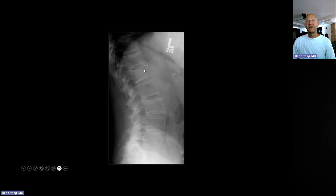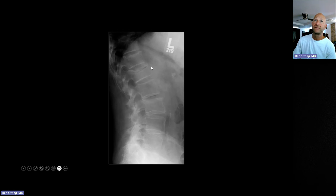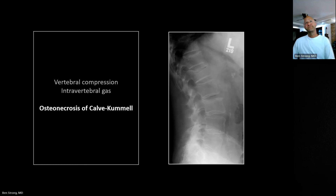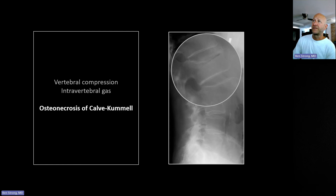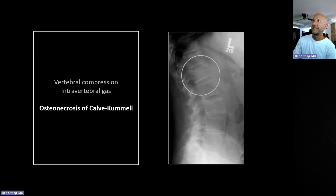I point that out because when I show this film to residents as a quiz question, they always miss it — they see the linear gas collection and write it off as disc space gas, but it clearly is not. You can see it's lying below the level of the superior end plate. This is indicative of osteonecrosis — this is osteonecrosis of Kümmel disease, almost always related to steroids or some kind of insufficiency. The important thing to note is that it is always benign; it's not a pathologic fracture due to an underlying tumor. It's a pretty good sign that all you've got is osteonecrosis.